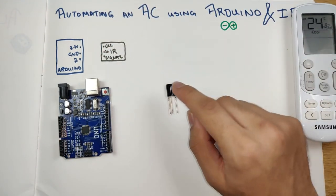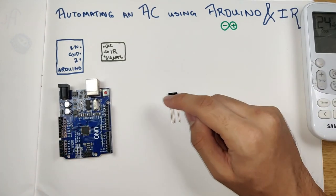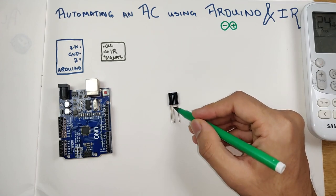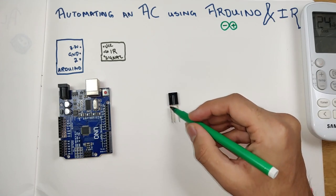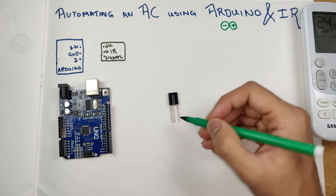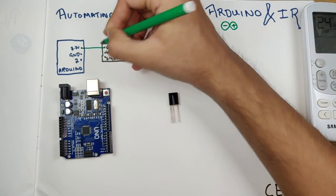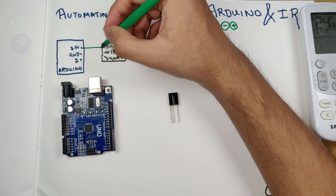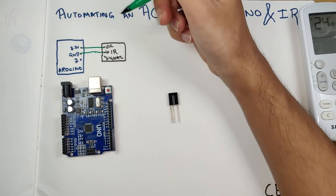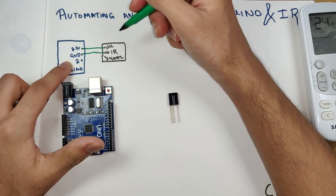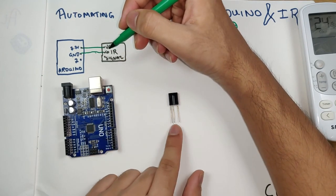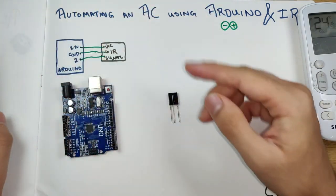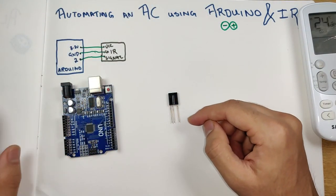For the first stage circuit, we connect the infrared receiver to the Arduino. The IR receiver has three pins: the middle pin is VCC, one side is ground, and the other is the signal pin. The VCC pin connects to Arduino's 3.3V pin, ground to Arduino's ground, and the signal pin connects to digital pin 2 on the Arduino Uno.